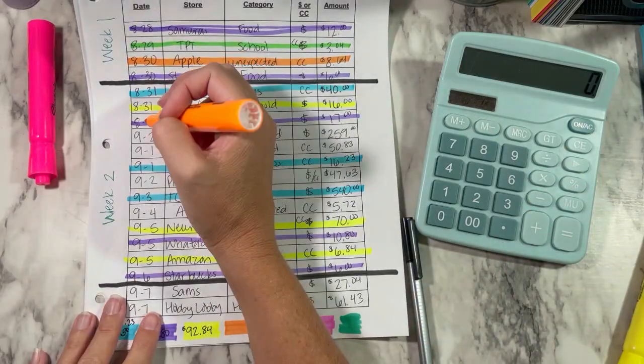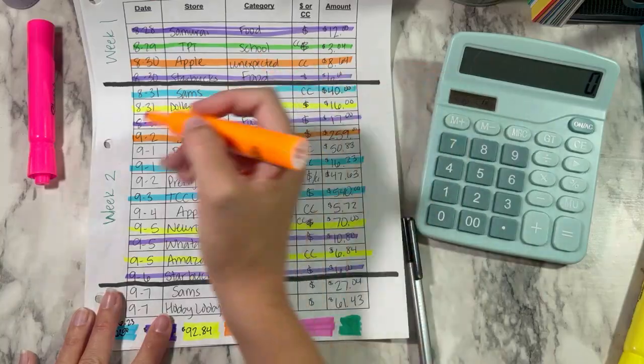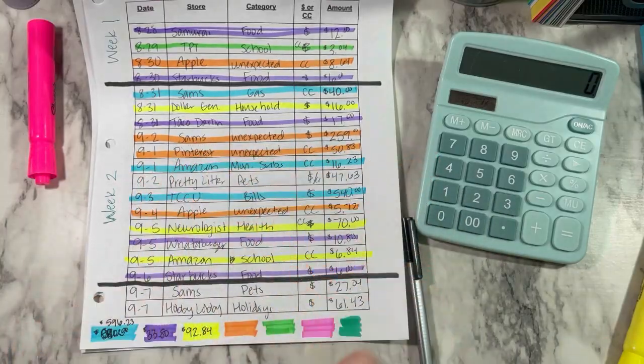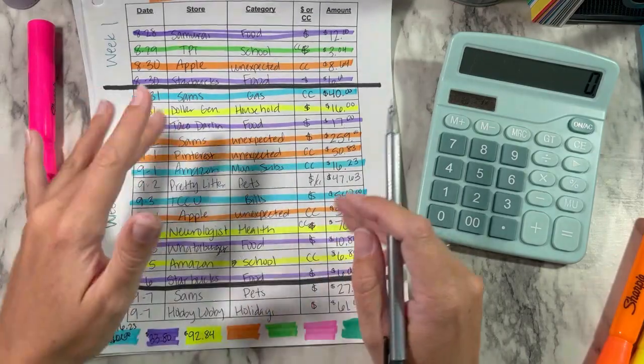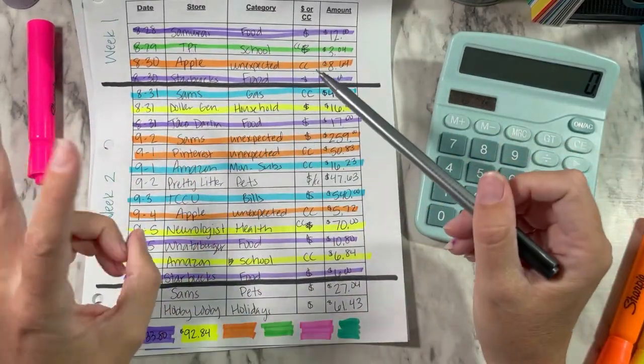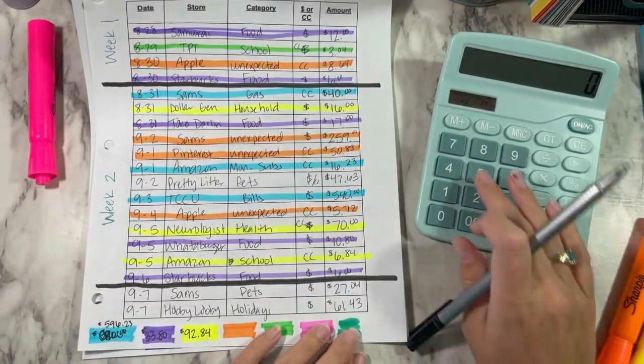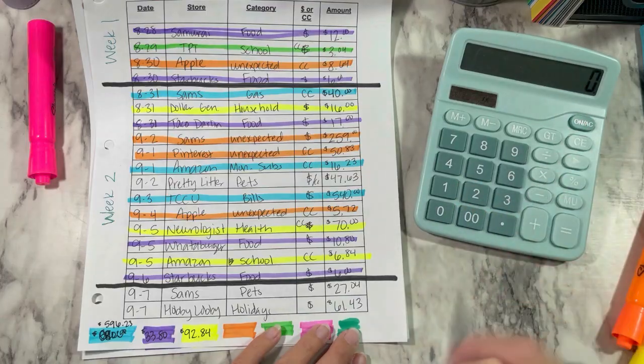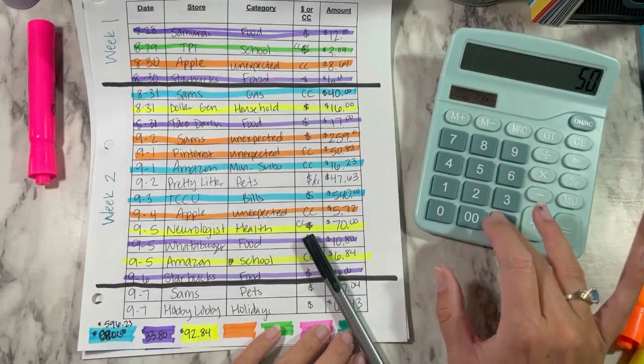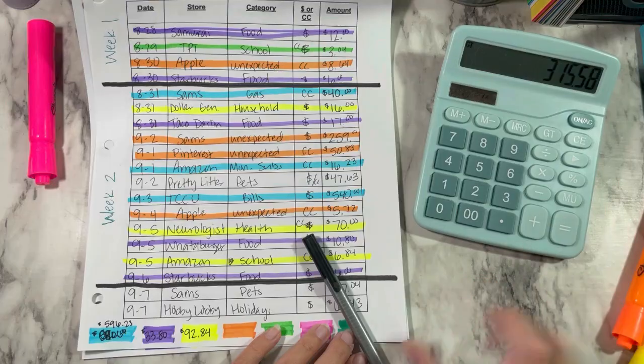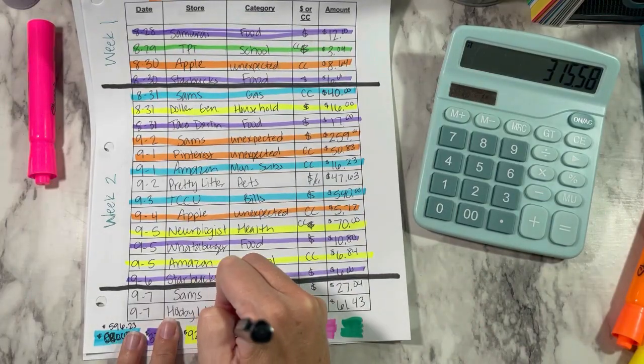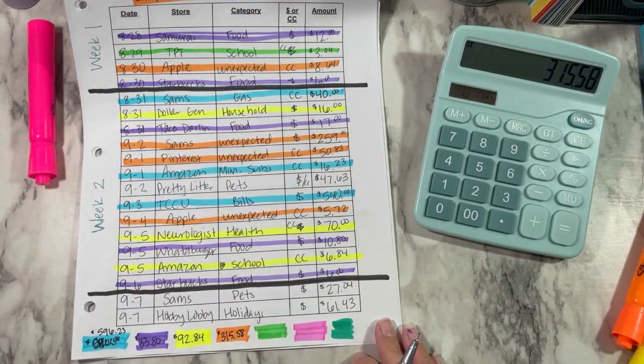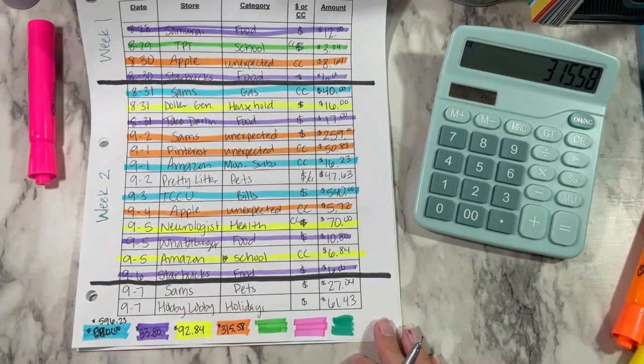And then unexpected, we had Sam's, I had to buy a new TV. I had my Pinterest ads that I did to help promote some of my products and my YouTube videos. I guess it's not really unexpected, but I just have that as unexpected, like if I didn't budget for it. Okay, so Sam's, I had $259, and then $50.83. Okay, $259 plus $50.83. There we go. Plus $5.72. So $315.58. And I did pull some money from savings for that Sam's for my new TV. I'm going to pay myself back.